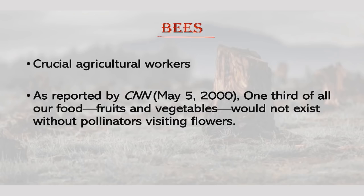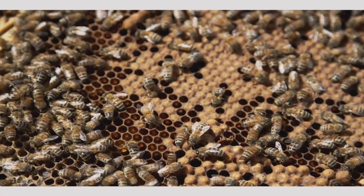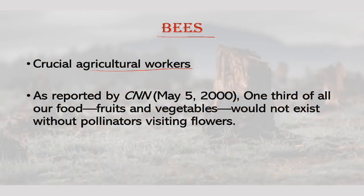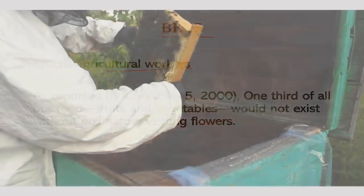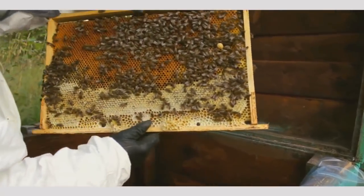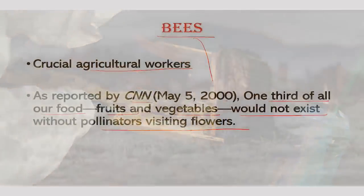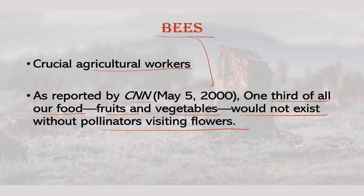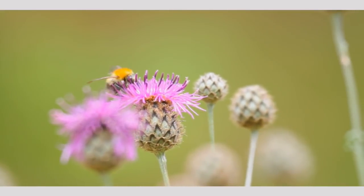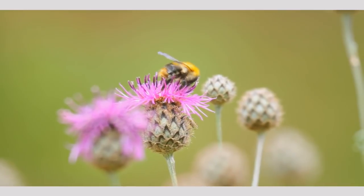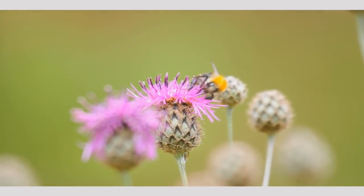Bees are crucial agricultural workers and provide enormous benefits for humankind. As reported by CNN in May 2000, one third of all our food — fruits and vegetables — would not exist without pollinators visiting the flowers. Bees are very vital to biodiversity. There are around 130,000 plants for which bees are essential to pollination, from melons to pumpkins, raspberries, all kinds of fruit trees, as well as animal fodder like clover.